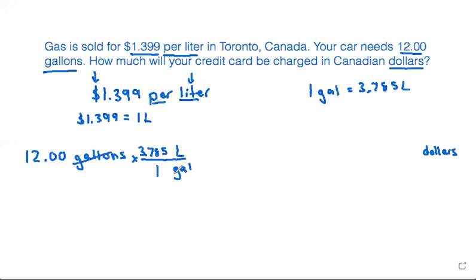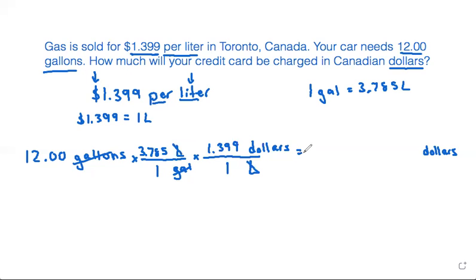Now we can cancel out the gallons and we're left with liters, but we don't want our answer in liters — we want dollars. So we do another conversion factor to cancel out the liters. We put liters on the bottom and dollars on top. The relationship is that $1.399 is equal to one liter. The liters cancel out, and we multiply: 12.00 × 3.785 × 1.399 = 63.54258. This is the number of dollars.